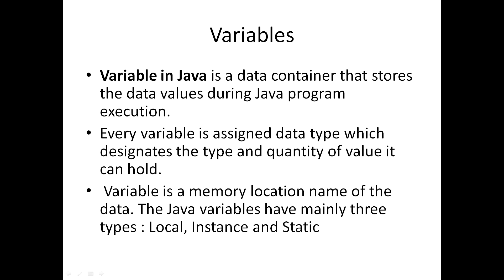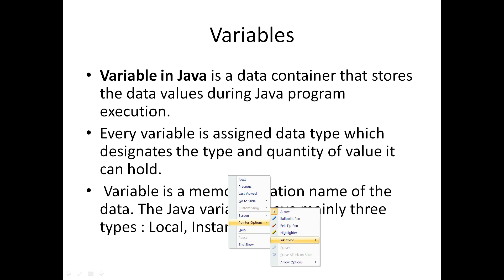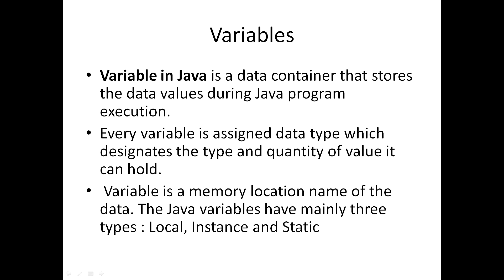How many types of variables are there? We can declare a variable as local, as static, or as an instance variable. So there are three types of variables. The variable in Java stores values, and what type of values will be stored is decided by the data type. The three types of variables in Java are local, instance, and static.